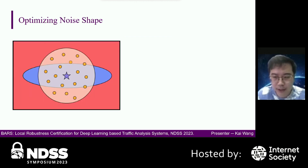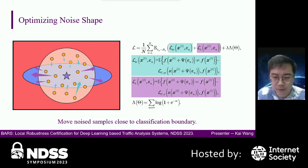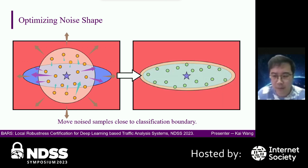The second module of the training stage is optimizing the noise shape. The initial noise shape does not match the classification boundary. We use a loss function to move noise samples close to the classification boundary. The first part of the loss function moves wrongly classified samples towards the correct decision region. The second part moves correctly classified samples towards the wrong decision region. The third part is the regularizer, which can maximize the weight parameters. Through minimizing this loss function, we can make the noise shape adapt to the classification boundary.